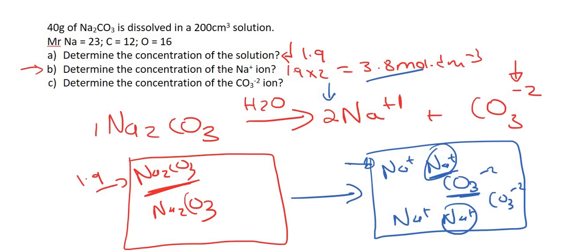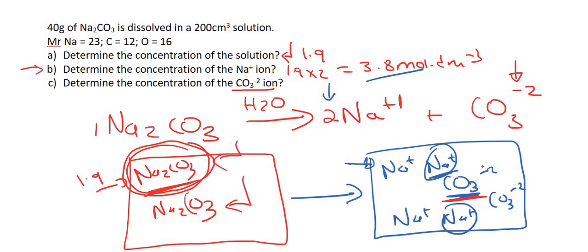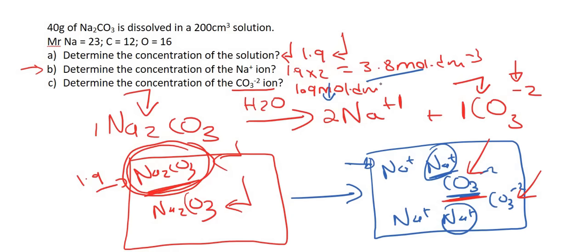Part C: determine the concentration of the carbonate ion. For every one Na₂CO₃ that breaks up, it produces one carbonate ion. So the ratio of Na₂CO₃ to CO₃²⁻ is 1:1, meaning their concentrations are the same. Since the concentration of Na₂CO₃ is 1.9, the concentration of the carbonate ion is also 1.9 mol·dm⁻³.